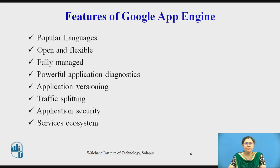We will see the different features of Google App Engine. First, it supports popular languages. You can build your applications using Java, Ruby, Node.js, Go, Python, or PHP. Or you can bring your own language at runtime.